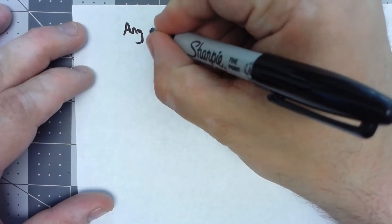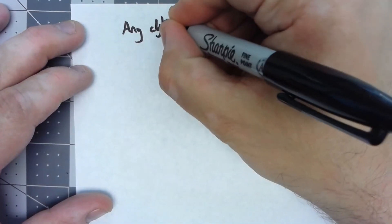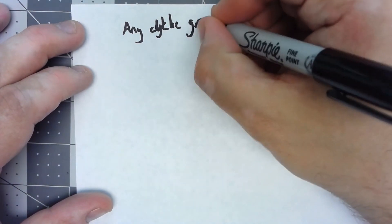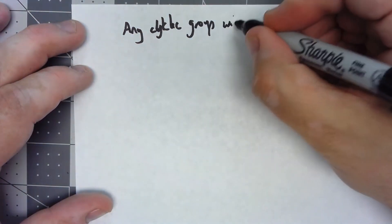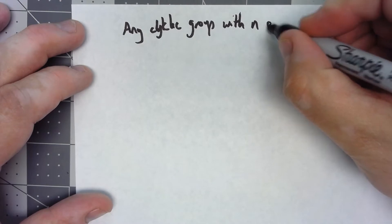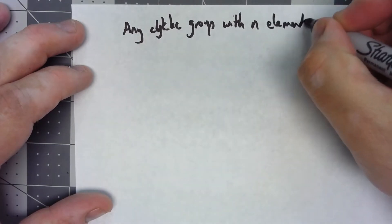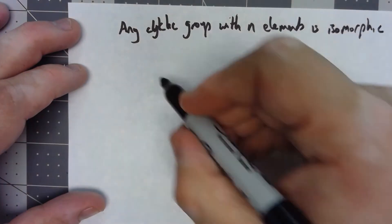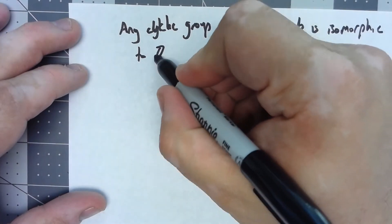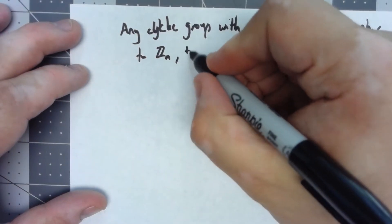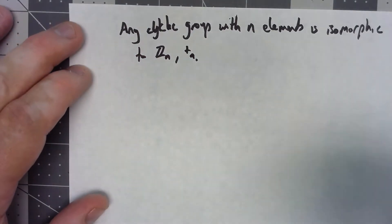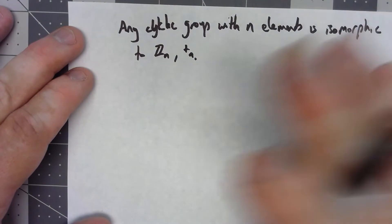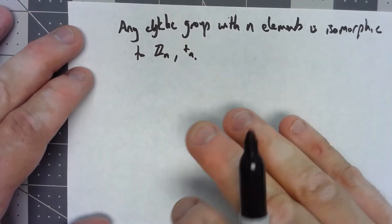Any cyclic group with n elements is isomorphic to Zn with addition mod n. I'm not going to go through everything just as much as we did on the last one.